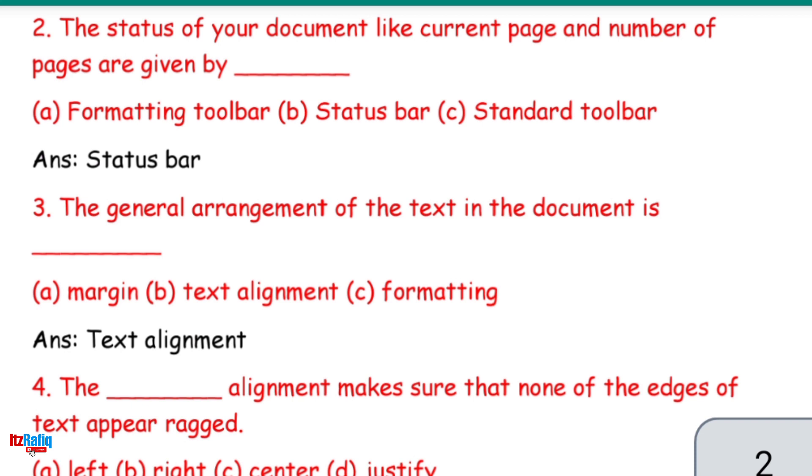3. The general arrangement of the text in the document is blank. A. Margin, B. Text Alignment, C. Formatting. Answer: Text Alignment.